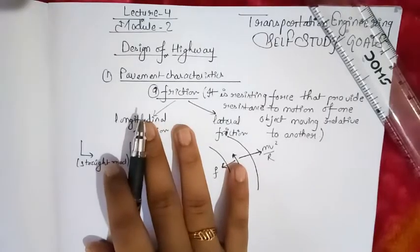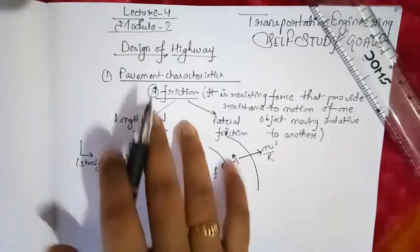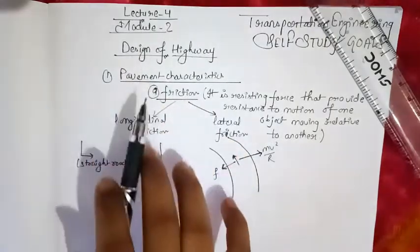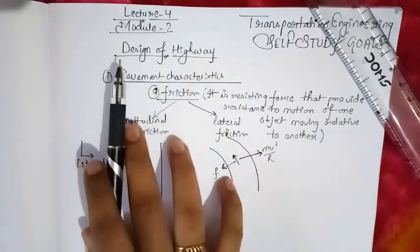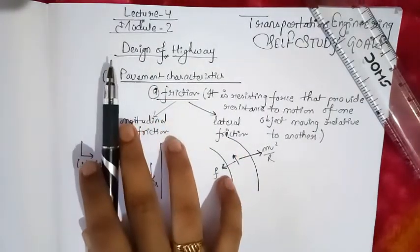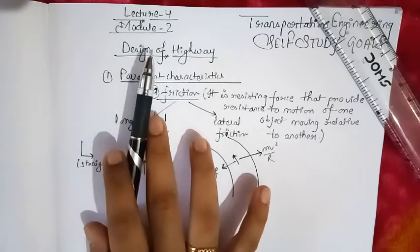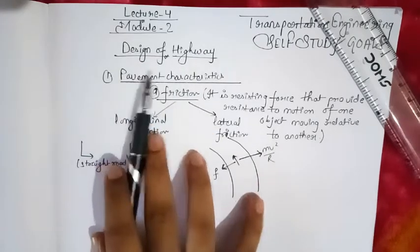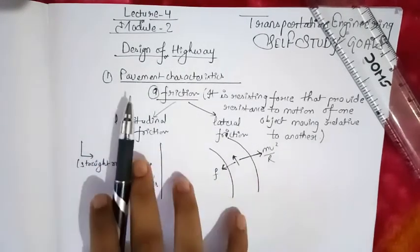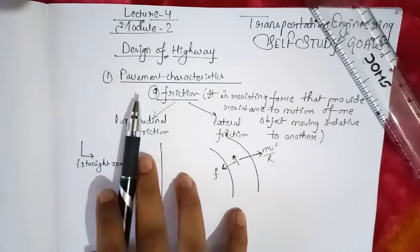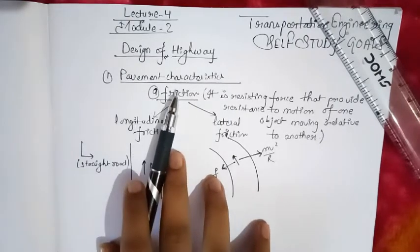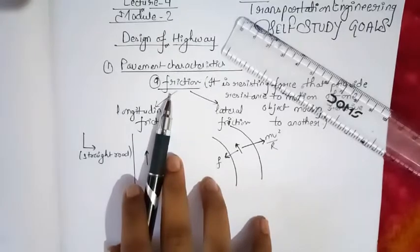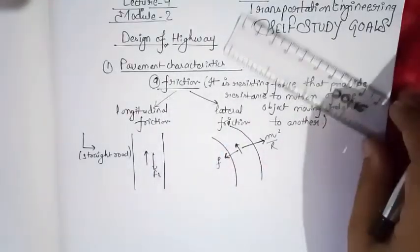Hi everyone, welcome back to my YouTube channel. This is the fourth lecture of transportation engineering. In the previous lectures we covered Module 1, the introduction part. From today's lecture we are going to start Module 2, that is the design of a highway. In the design of a highway we will first start with the pavement characteristics, and the first topic is friction.